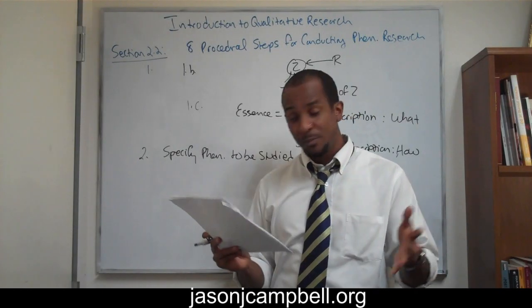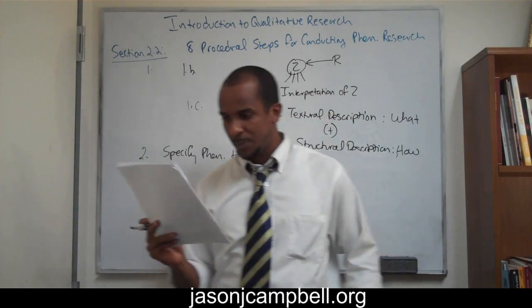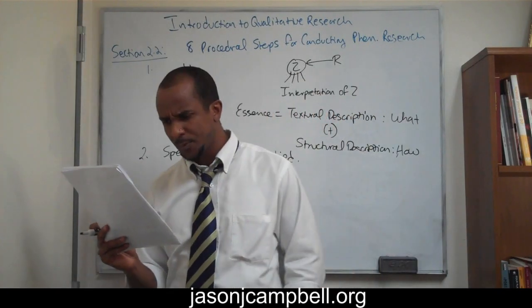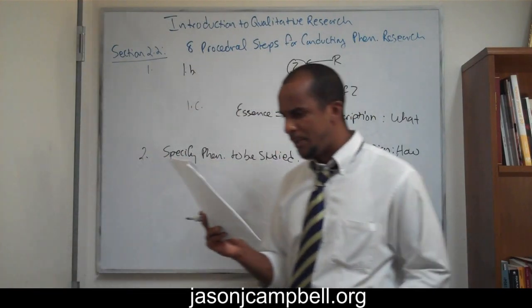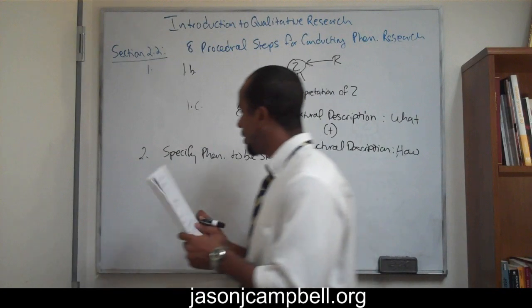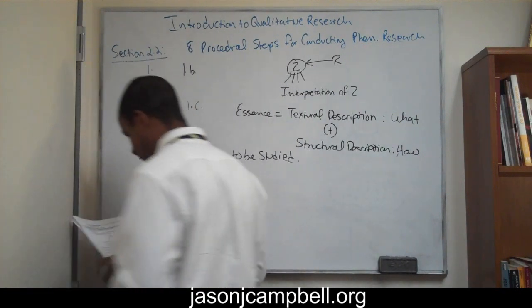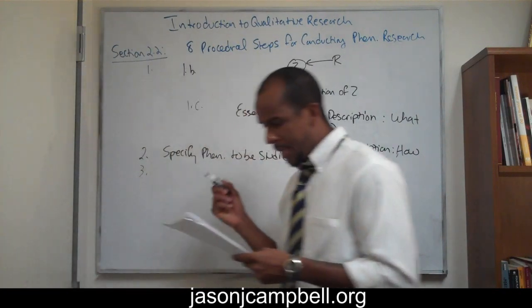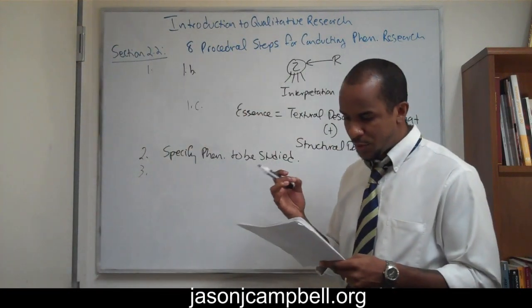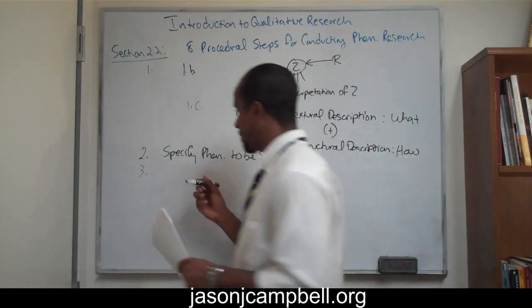We're talking about human beings and not numbers. The phenomena must be identified. Number three: bracket research bias and interpretation.